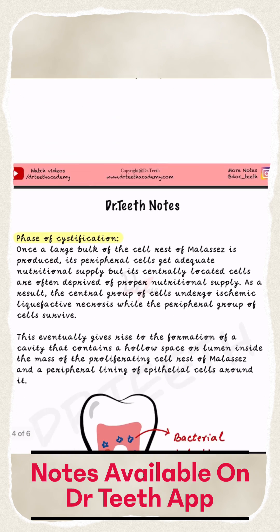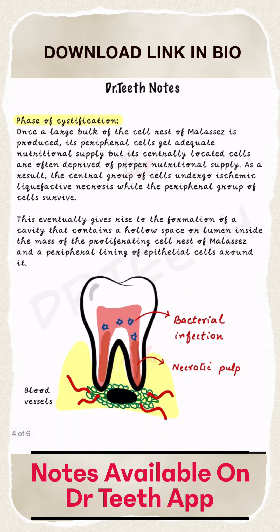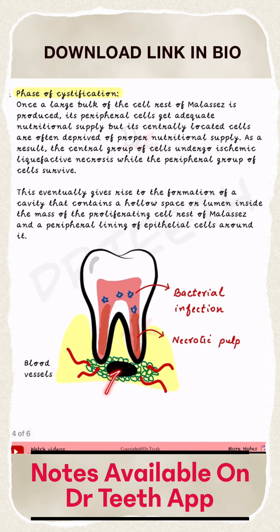Then we have the phase of cystification. The cells which are outside get the blood supply, but the ones which are inside don't get the blood supply. So they become necrotic, and we have a hollow space or lumen inside the mass. That is the phase of cystification — the cyst has started forming.